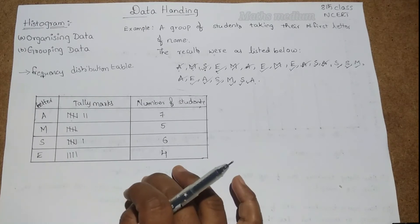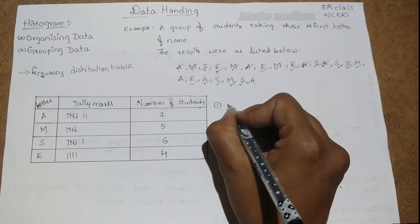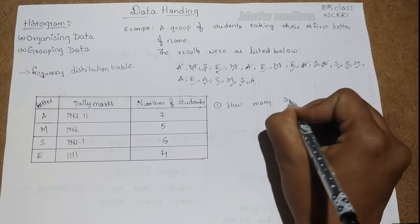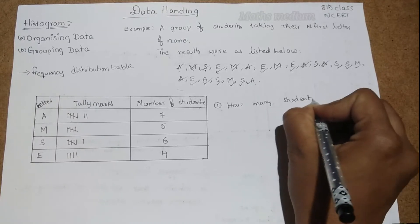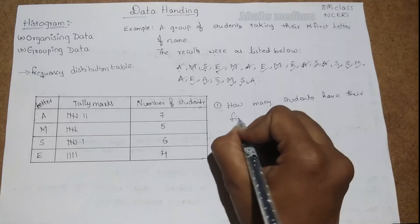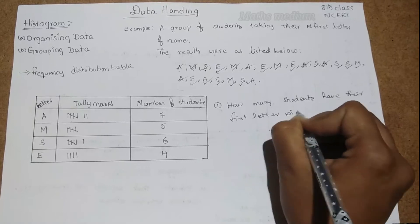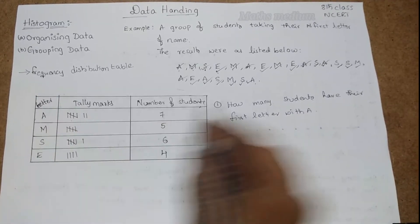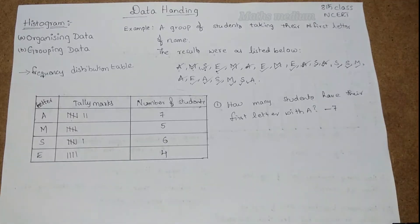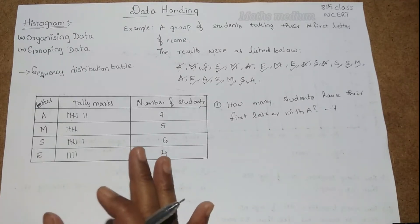For example, if the question is: how many students have their first letter as A? We can easily say seven students. Like this we can answer easily by observing the frequency distribution table. Next, coming to the histogram — we can plot this information in the form of a histogram.